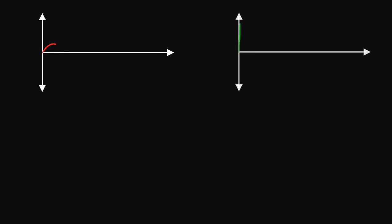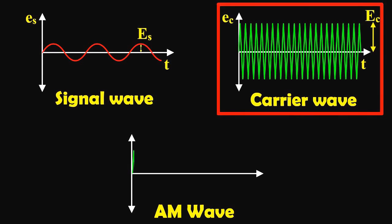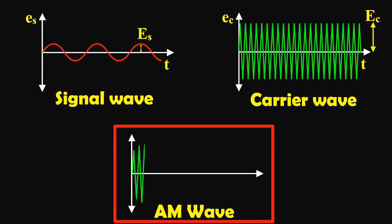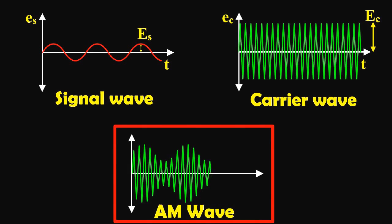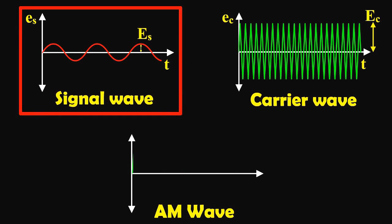What is amplitude modulation (AM)? When the amplitude of a high frequency carrier wave is changed in accordance with the intensity of the signal, this process is called amplitude modulation. In amplitude modulation, only the amplitude of the carrier wave is changed; the frequency and the phase of the carrier wave remain constant.